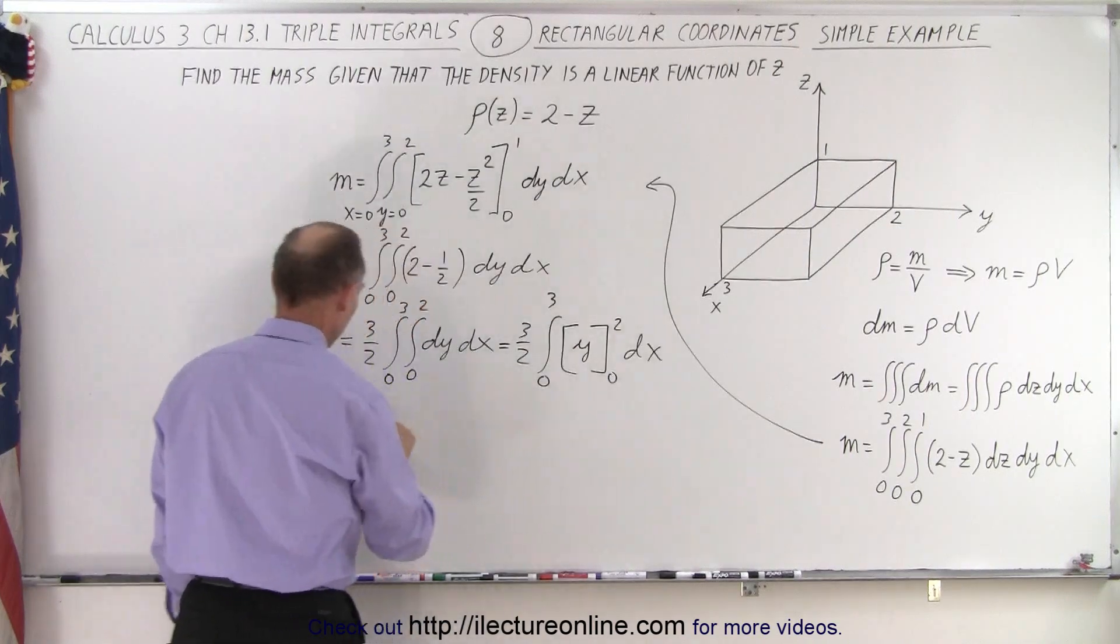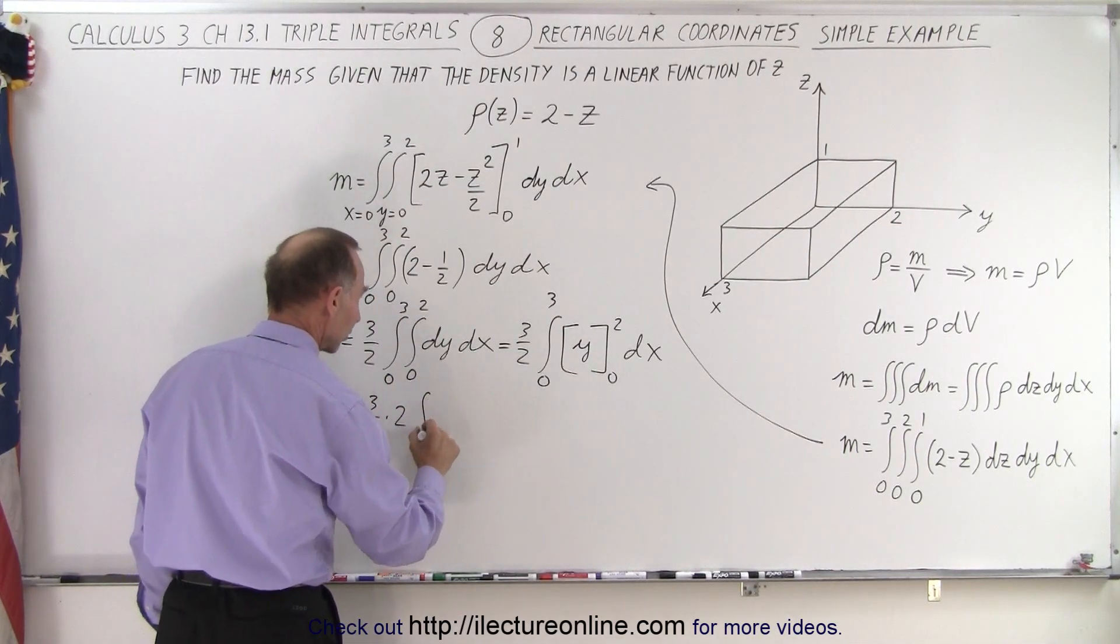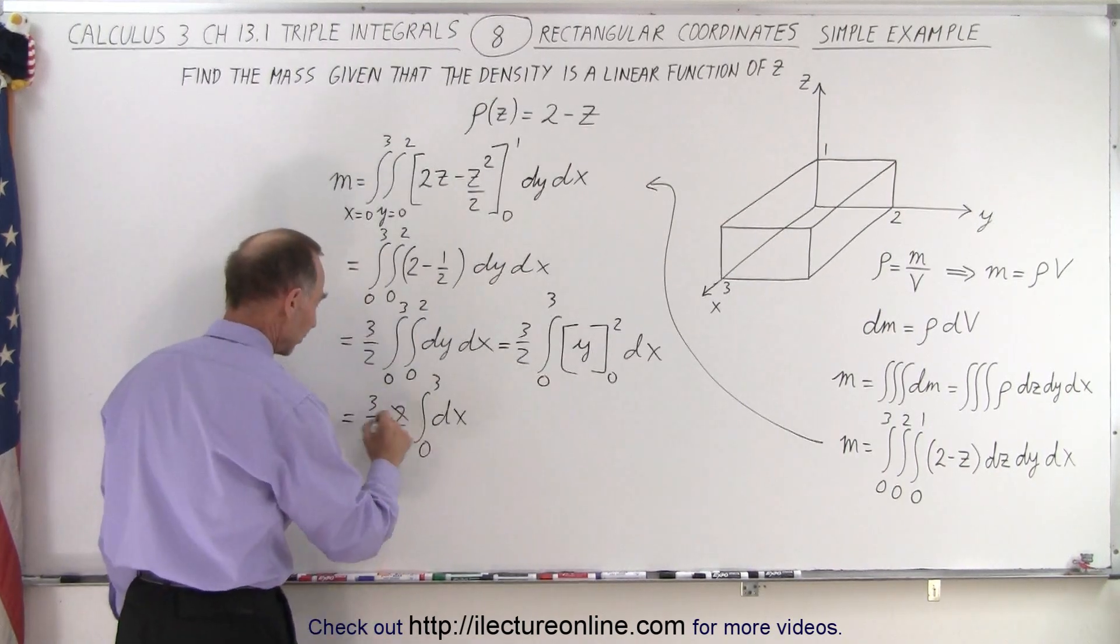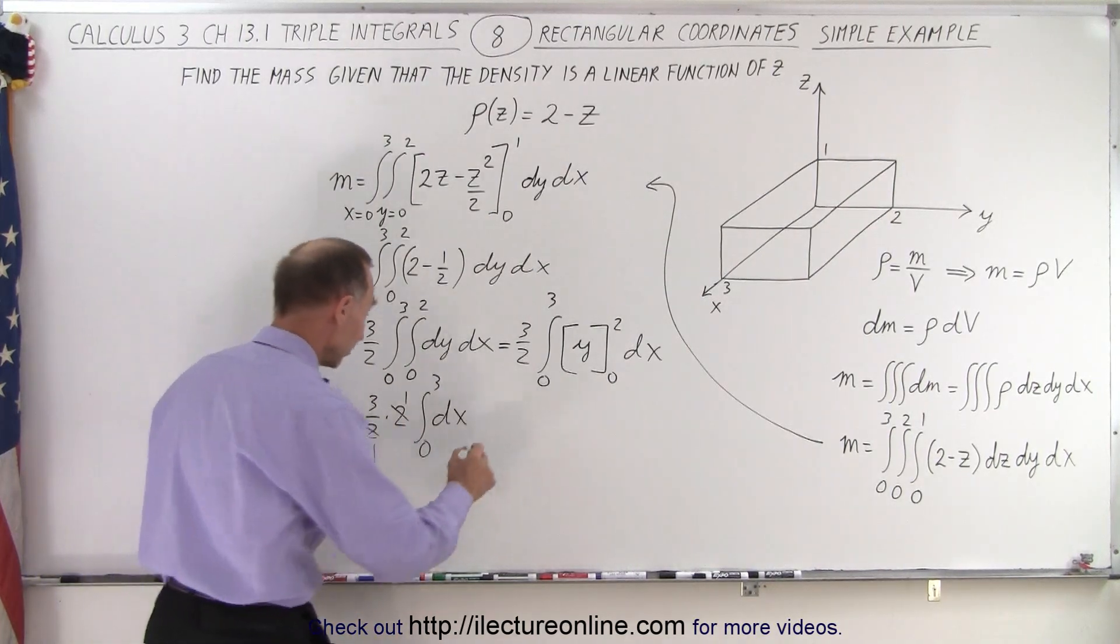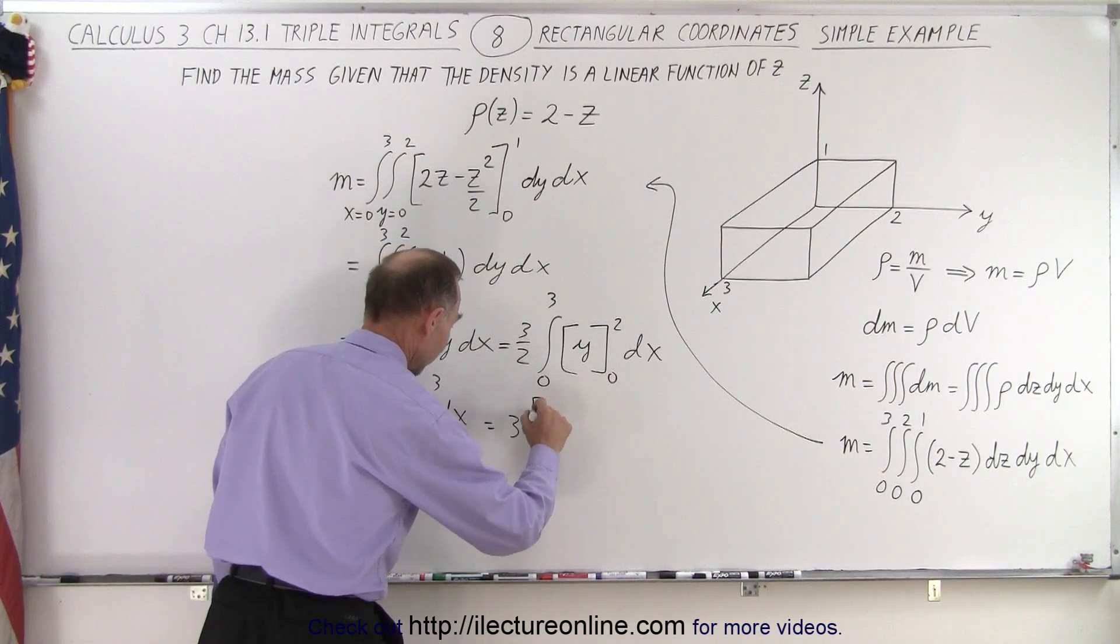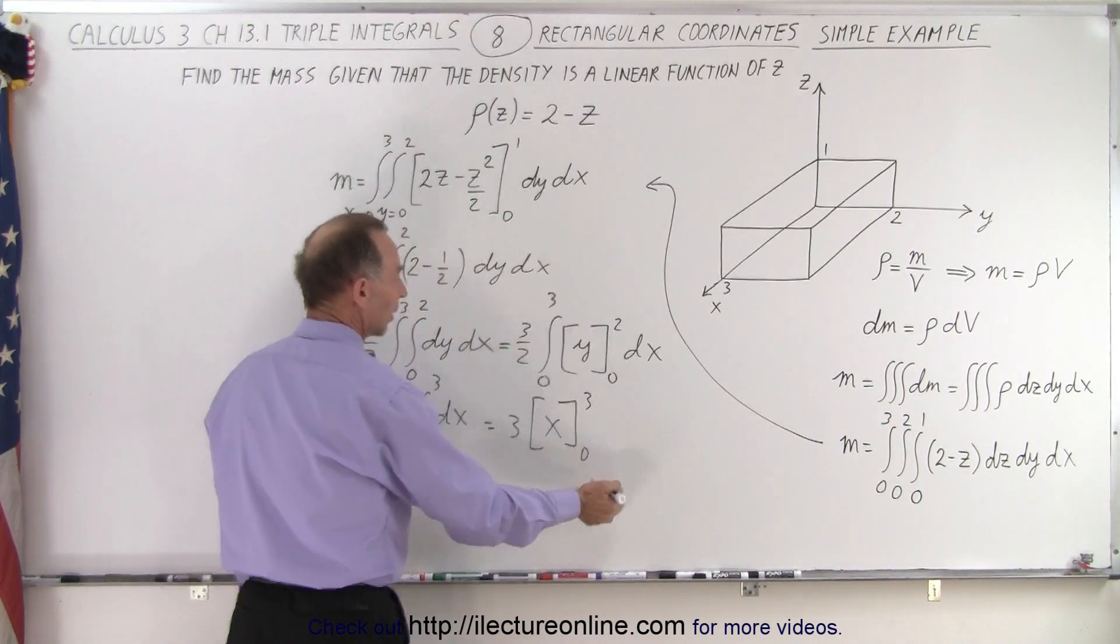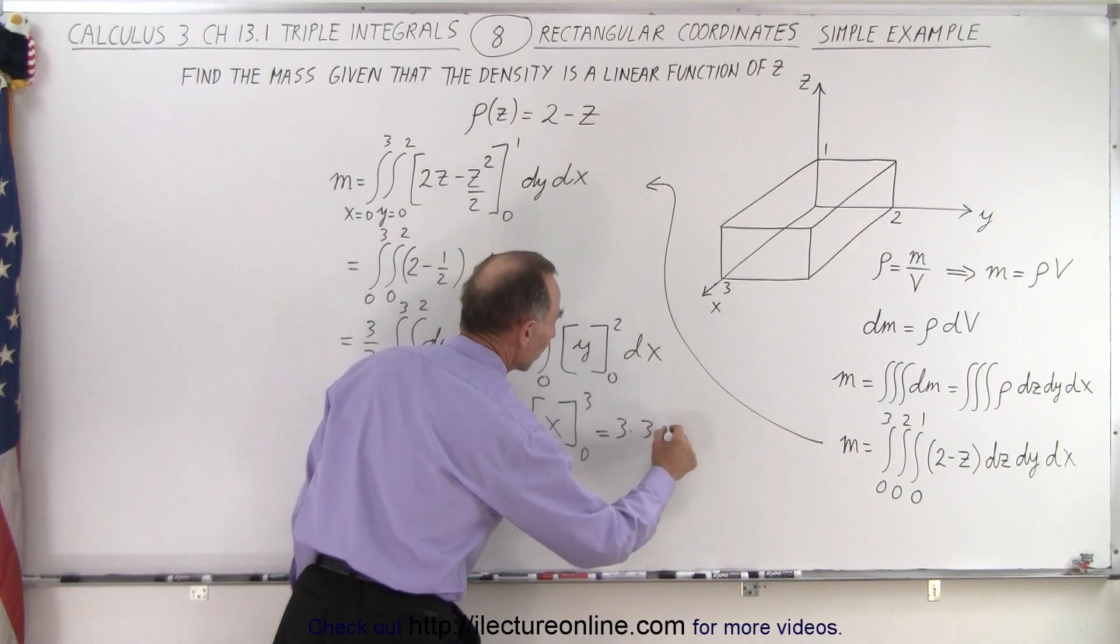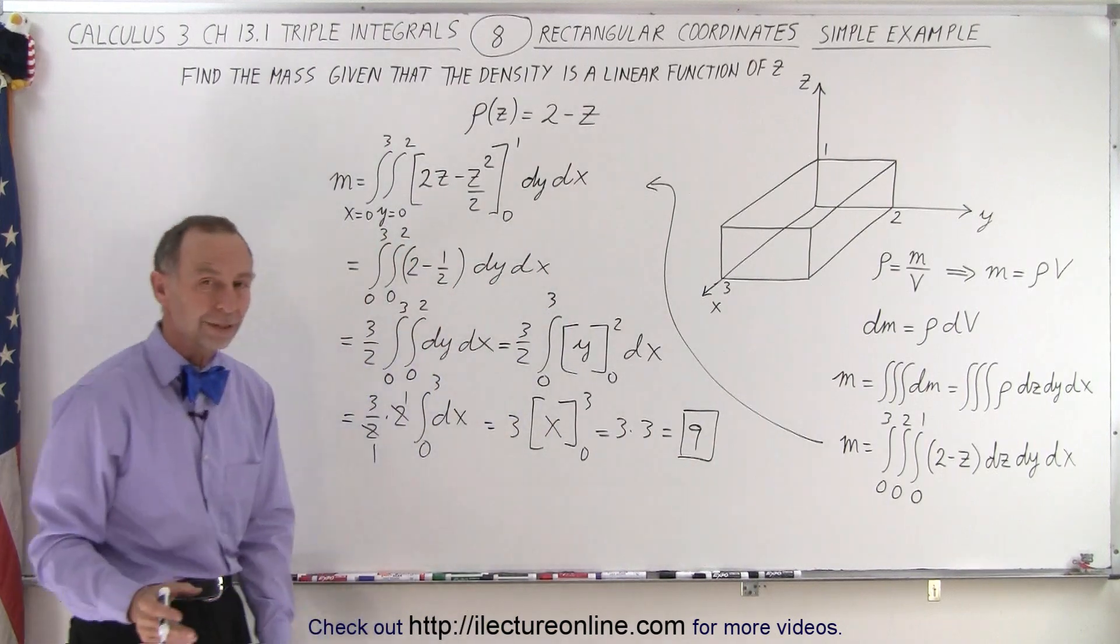So this becomes equal to 3 over 2 times 2 times the integral of dx from 0 to 3. Notice that the 2's cancel. We end up with just a 3 in the front. Now we can integrate dx, which becomes x. So this is equal to 3 times x evaluated from 0 to 3. Plug in the lower limit, you get nothing. Plug in the upper limit, we get 3 times 3, which is equal to 9. And that is the result of what we're looking for. That is the mass of that object.